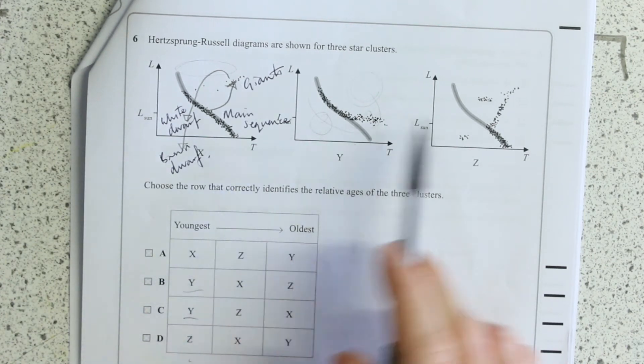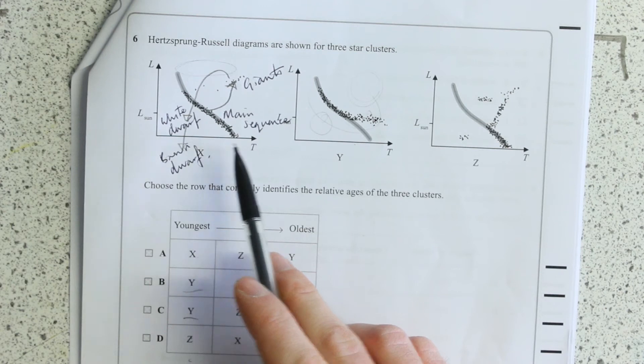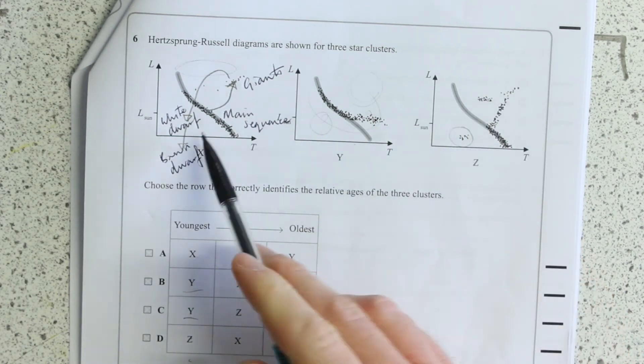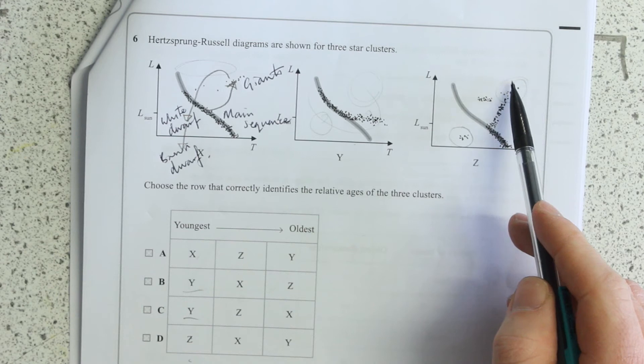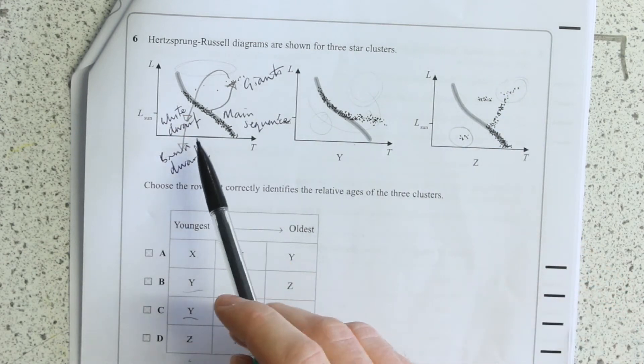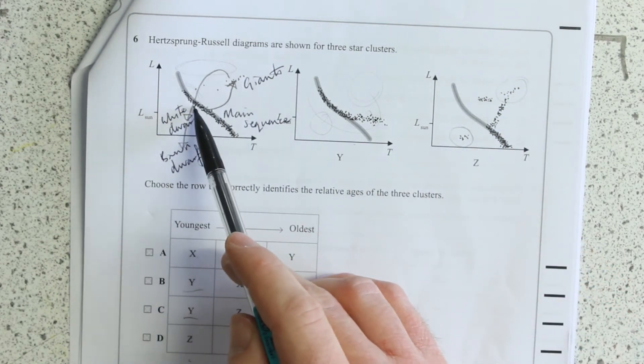Then we just need to decide between these two, and Z is the one that has some Dwarfs. Both have some Giants. Both of them, you can see that some of the more massive stars have moved out.